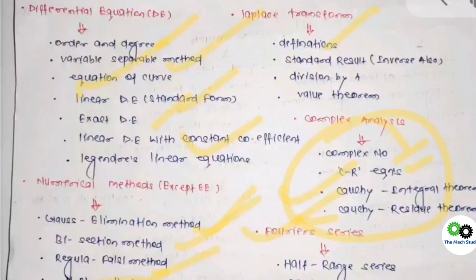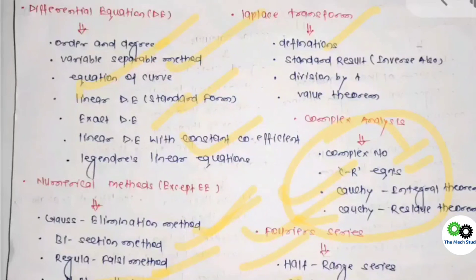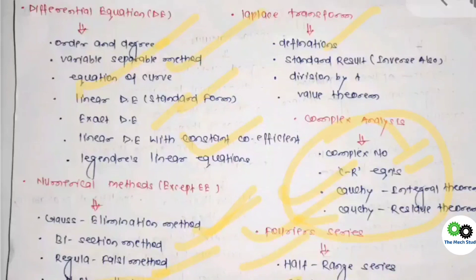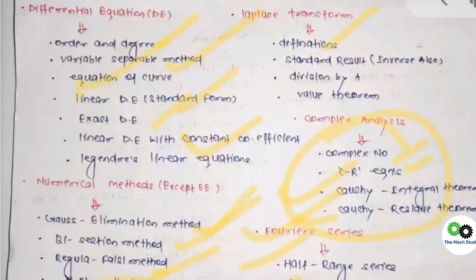For Fourier Series, questions have appeared in the last two years, but the chances for this year are very few. In my opinion, if you have time, at least go through the formulas for calculating the constants in the series. You only need to study the half-range series — other than that, it is not required in this area.